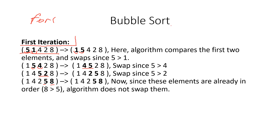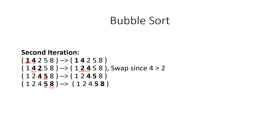One characteristic of bubble sort is that after the first iteration the biggest element will always reach the end. When we meet the biggest element near the beginning of the array, we keep swapping it with the next element until it reaches the last position. In the second iteration the second largest element takes its place.